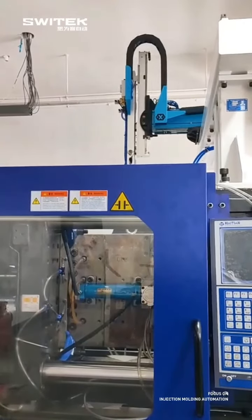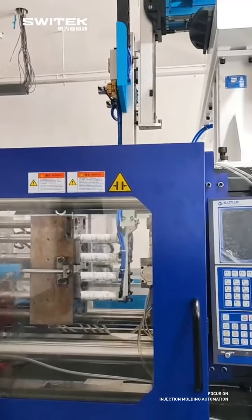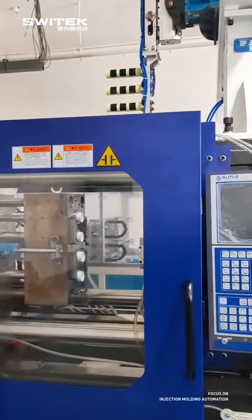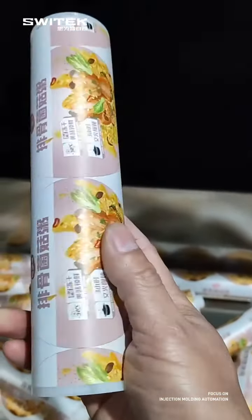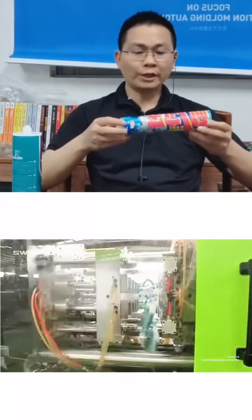Inserting a long label into the cavities of the mold. So to produce a silicon cartridge tube in an IML way, you need to take care of not only the mold design, but also the quality of the labels.